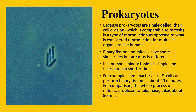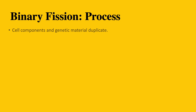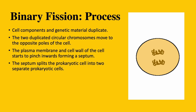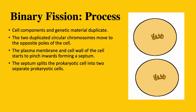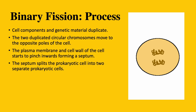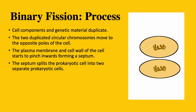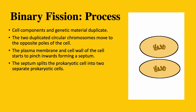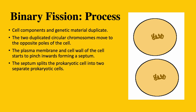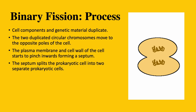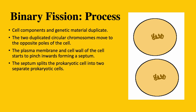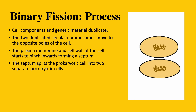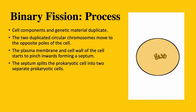The process of binary fission: like mitosis, binary fission starts with the duplication of cell components. The cell's single circular chromosome unwinds and replicates to form two circular chromosomes. While this is taking place, the other cell components duplicate as well. Once the two circular chromosomes are made, they move to the opposite poles of the cell. The plasma membrane and cell wall then start to pinch inwards at the middle of the cell, forming a septum.